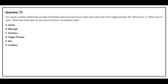Question number 75. You create a simple chatbot that provides information about store hours when a user inputs one of the trigger phrases like 'store hours' or 'when are you open.' What three node types do you use for the bot's conversation path? Options: A) action, B) message, C) question, D) trigger phrases, E) end, F) condition. The correct answers are option B: message, option D: trigger phrases, and option E: end.